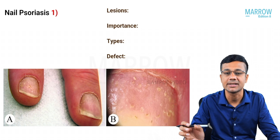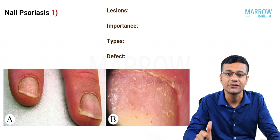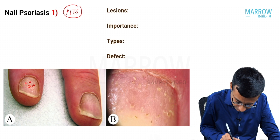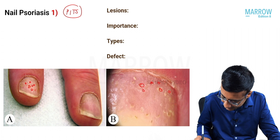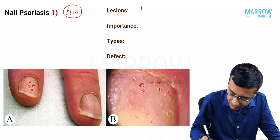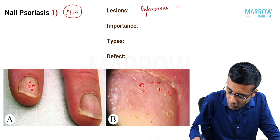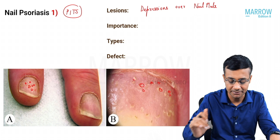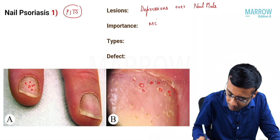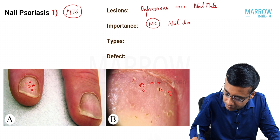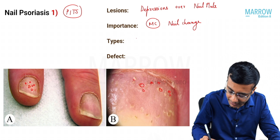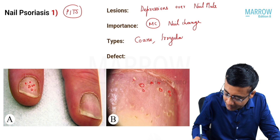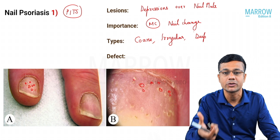Now let us look at the different nail changes in psoriasis. The first and most common nail change is pitting — coarse, irregular, deep depressions over the nail plate. The defect is in the proximal nail matrix, the structure which produces the nail.